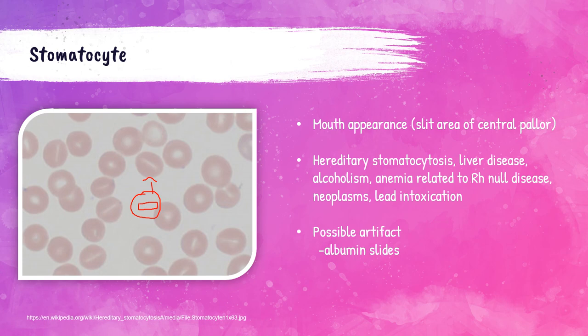Stomatocytes can also appear on the peripheral smear as artifact — they're frequent in slides made with albumin. In hematology, you may prepare a peripheral blood smear with albumin in cases where there are smudge cells, which are white blood cells damaged in the process of making the smear. Adding albumin can prevent this breakage. However, with albumin smears you cannot evaluate red blood cell morphology as they can create false stomatocytes. In that situation, you would count white blood cells on the albumin smear but look at red blood cell morphology on the original peripheral smear.